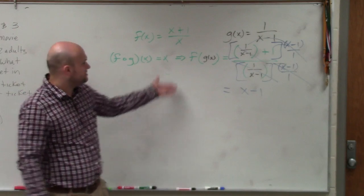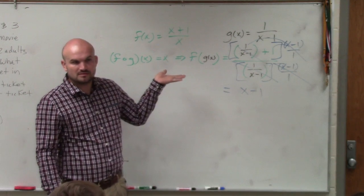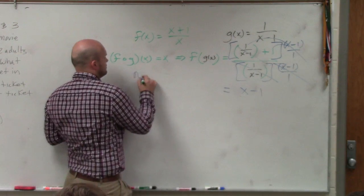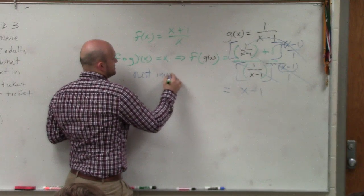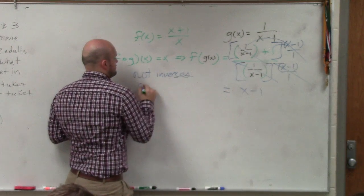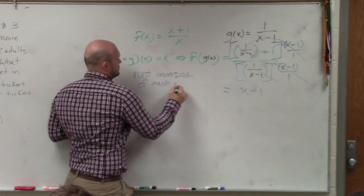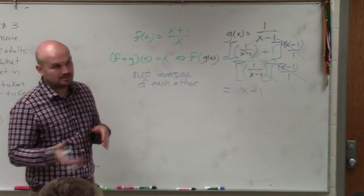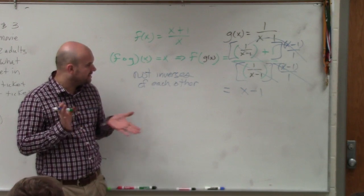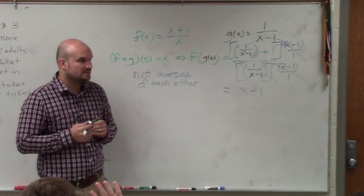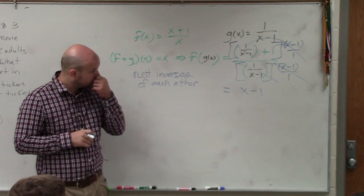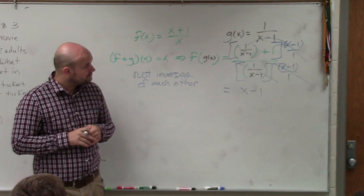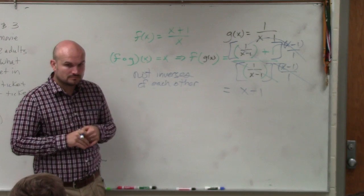Now, does that simplify to give me x? No. So they are not inverses. If one of them works and one of them does not work, then they're not inverses. Yes? Oh, I thought you had to prove the problem was an inverse. But I didn't know that it couldn't be an inverse.